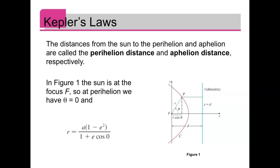So to come up with formulas for the perihelion and aphelion, if the sun is at the focus f, for the perihelion we have theta equals zero, so the radius r equals a times one minus e squared over one plus e cosine zero. And then cosine of zero is one, so I have a times one minus e squared over one plus e. But I can factor one minus e squared to one minus e times one plus e, and that's over one plus e, those cancel.